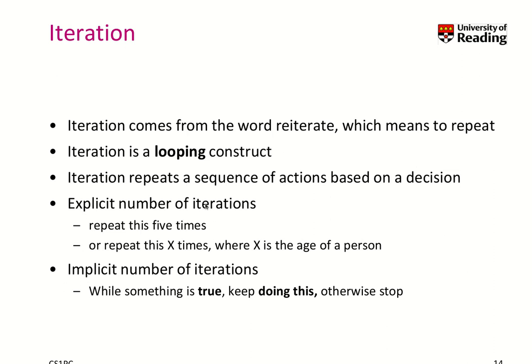We also have implicit numbering. You can say: while something is true, keep doing this; otherwise, stop. For example, while someone passes by, hand out a sheet of paper — like handing out information sheets to students at the entrance to a lecture hall.